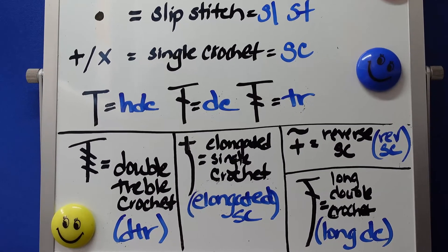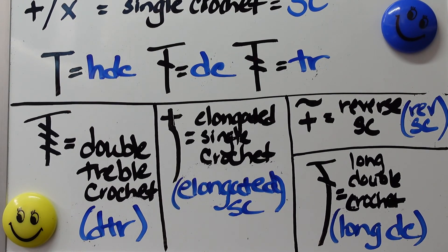Moving on to our new stitches: we have the double treble crochet, and you'll notice that T has three slashes. Think about it as you yarn over three times before entering the stitch. Its abbreviation is dtr for double treble crochet.